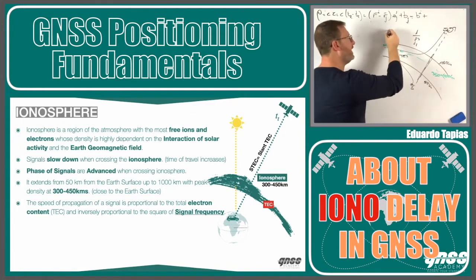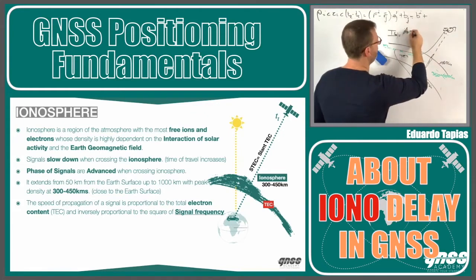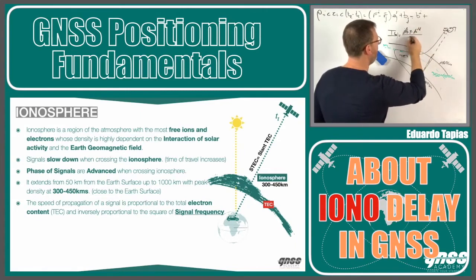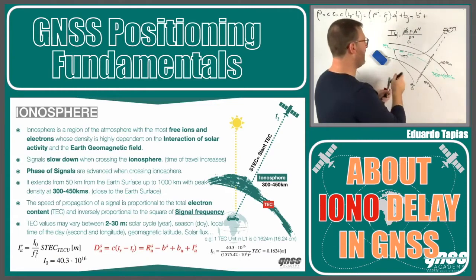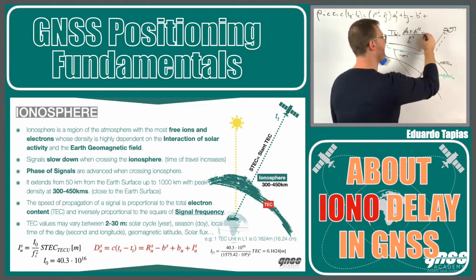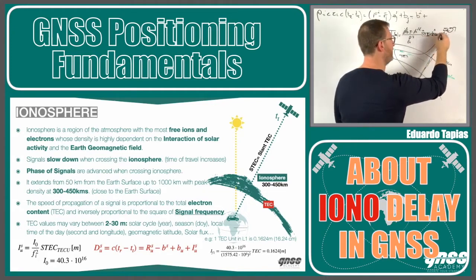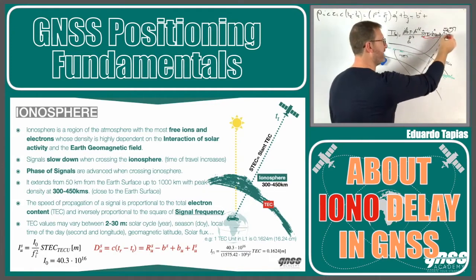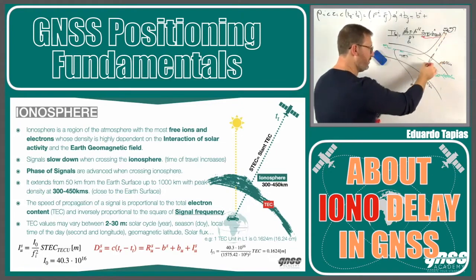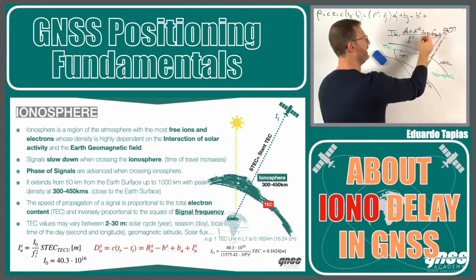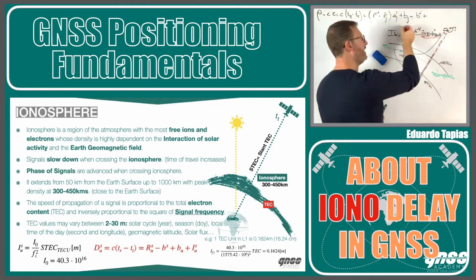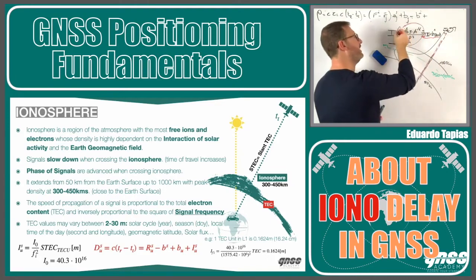The ionospheric delay, if I call it I in meters, will be something like 40.3 × 10^16, divided by frequency squared, multiplied by what we call the STEC — Slant Total Electron Content — in TEC units. STEC means slant from the satellite to the user, the slant delay. This slant delay in TECUs, multiplied by this factor, will give me something in meters.